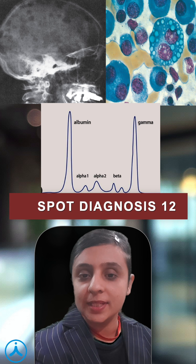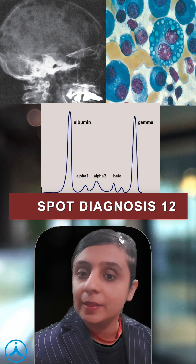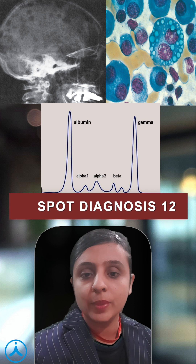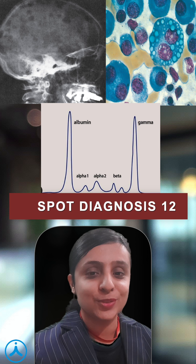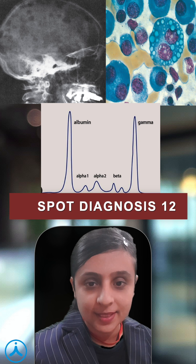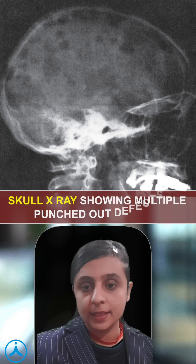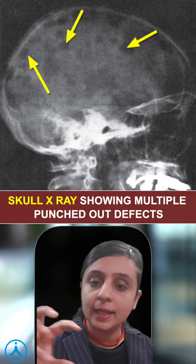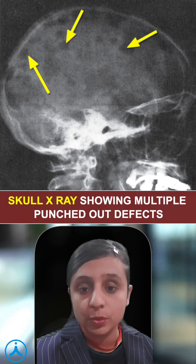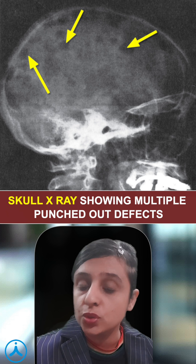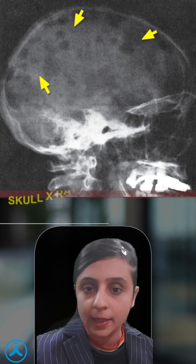Hi students, today's spot diagnosis is a very important topic repeatedly asked in previous year papers and you all must be able to identify this. First we can see a skull X-ray showing multiple lytic lesions or multiple punched-out defects which are usually 1 to 4 cm in diameter.